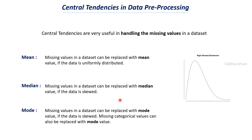Another main application of mode is when there are missing values in categorical columns. Categorical columns contain categories or classes — like gender or color of a ball — which are not numerical values. We cannot find mean or median for categorical values; we can only find mode. When categorical values are missing in a dataset, in most cases we use mode to replace them.